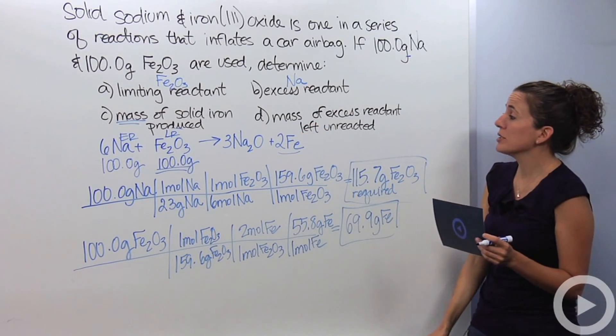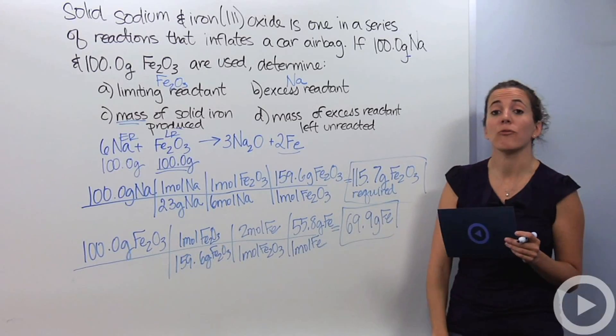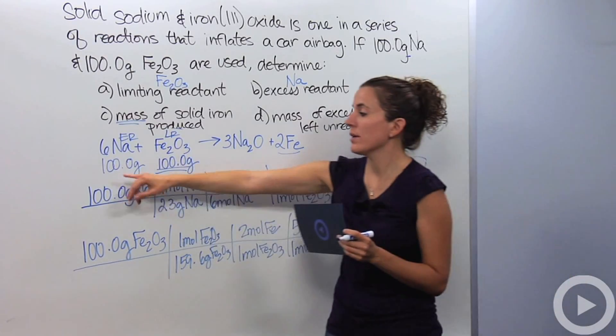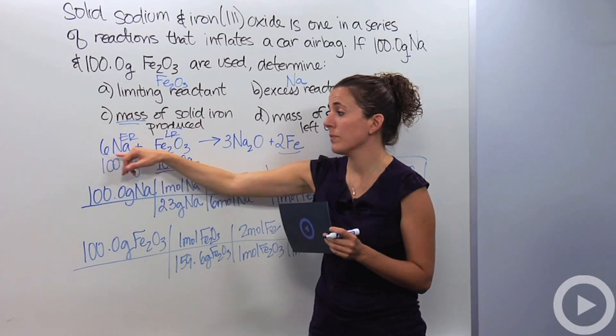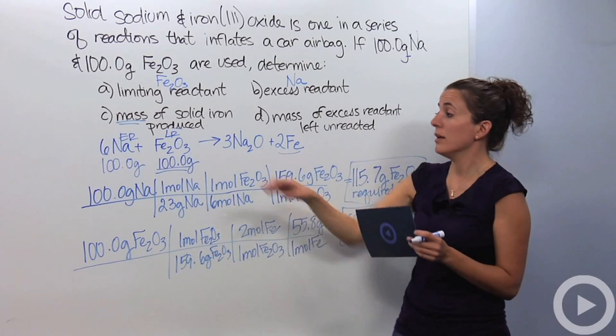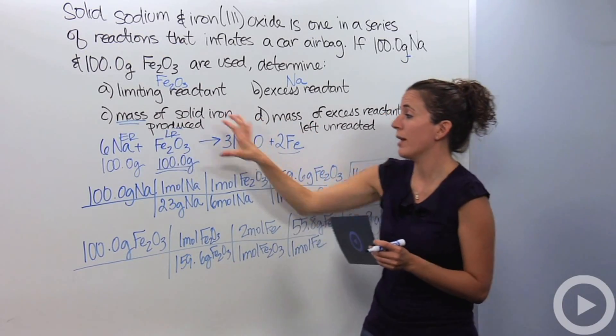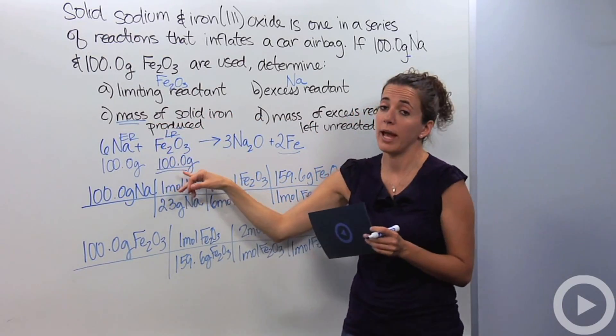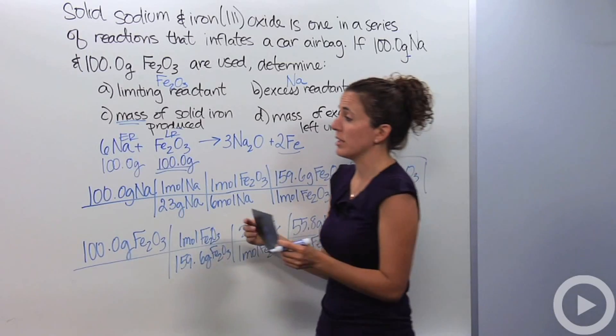Lastly, I'm going to do D, how much of the excess reactant is left unreacted. So, I know that I started out with 100 grams of sodium. How much actually reacted? So, in order to actually get the information, I have to deal with my limiting reactant. So actually, let's do the math over here.